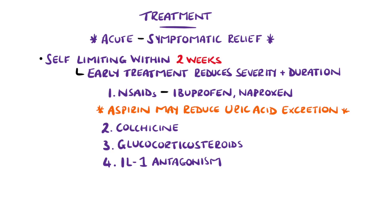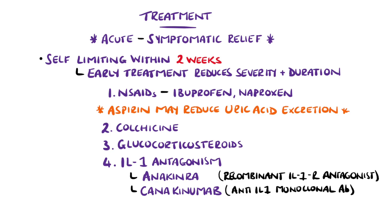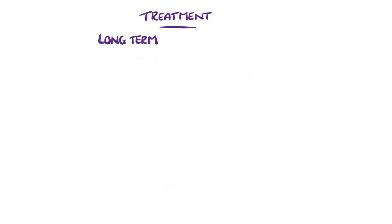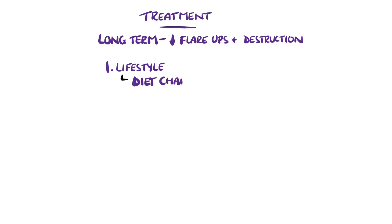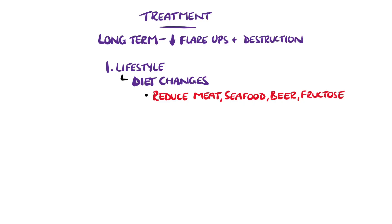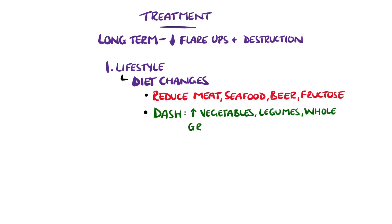Anakinra and canakinumab are anti-interleukin-1 agents that more recently have been shown to have some benefit. Longer term, the aim is to reduce urate levels to reduce the risk of flare-ups and chronic joint destruction. Lifestyle measures include reducing the consumption of meat, seafood, alcohol, and fructose, and diets like the dietary approaches to stop hypertension diet, which includes high amounts of vegetables, legumes, and whole grain wheats.